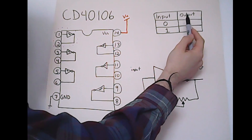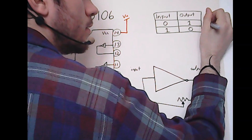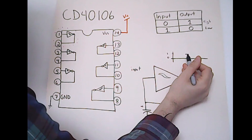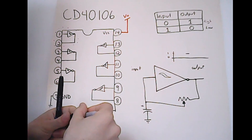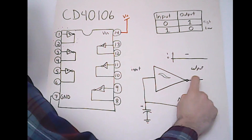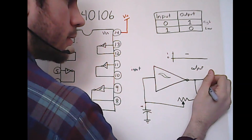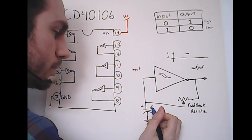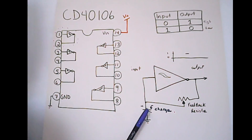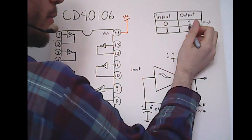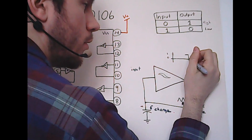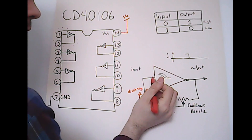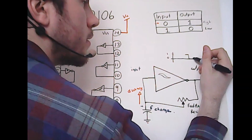Once the circuit is powered, let's say our input is set to low by default. According to the truth table, our output will automatically be set to high. Then the high level goes to the output of our circuit, and part of the voltage will go back to the input through the feedback resistor, charging the capacitor. Once it's full, the input level is brought to high, so the output goes to low. The capacitor will then discharge and bring the input back to a low level, bringing the output back to high.